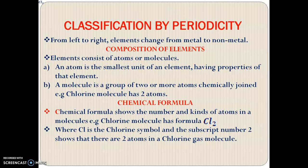For example, a chlorine molecule has two atoms. What is the chemical formula? The chemical formula shows the number and kinds of atoms in a molecule. For example, a chlorine molecule has the formula Cl2. The Cl is the chlorine symbol and the subscript 2 shows that there are two atoms of chlorine in the gas molecule.